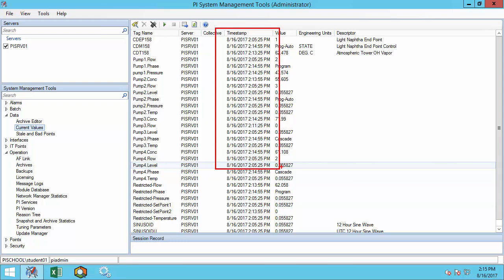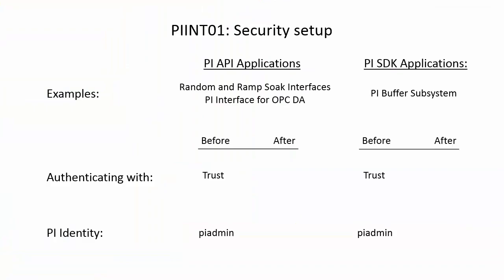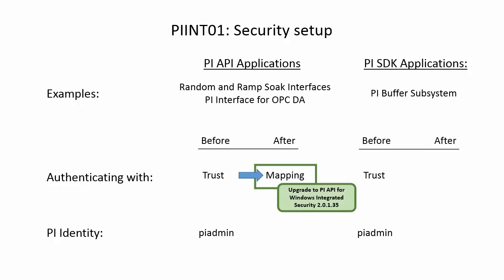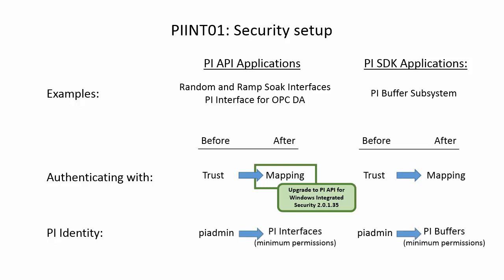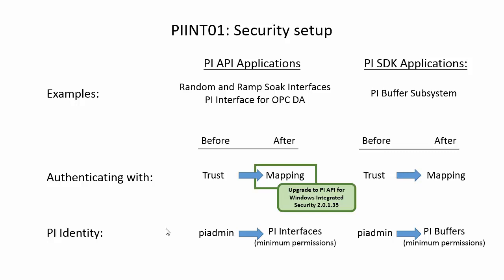Let's summarize our overall starting setup and where we would like to end up. On our interface node, we have API applications, Random and Ramsoak, as well as an SDK application, PI Buffer Subsystem. They are currently both authenticating with Trusts and receiving the identity PI Admin. We would like our API application to use a mapping, which will require an upgrade to the PI API for Windows Integrated Security. As a best practice, we would also like our SDK application to use a mapping, and we will set up minimum permissions required for the interfaces and buffer.